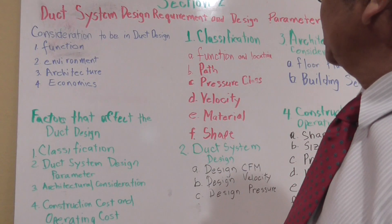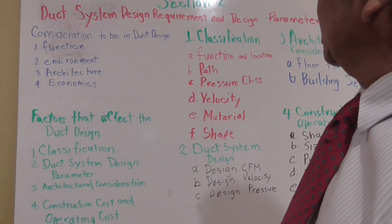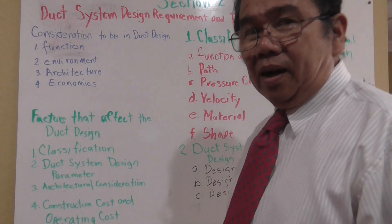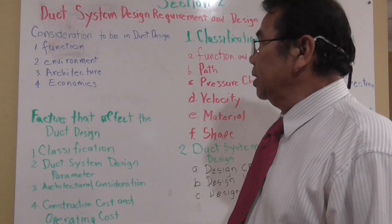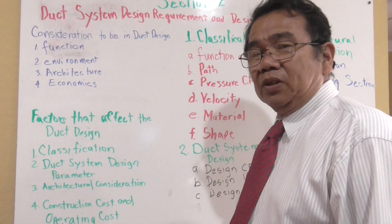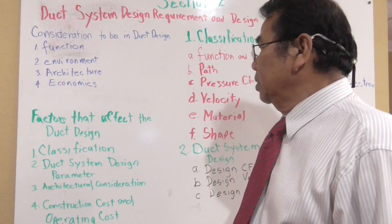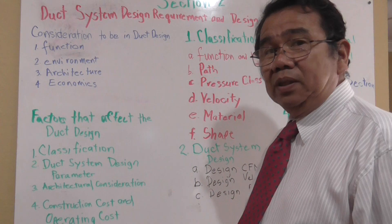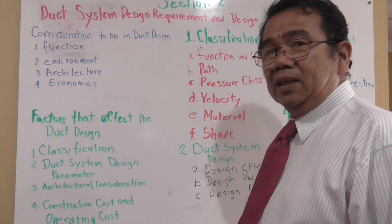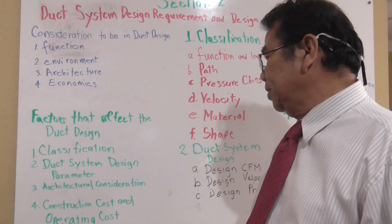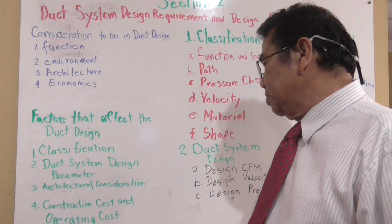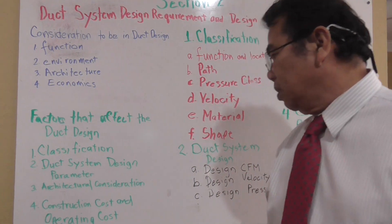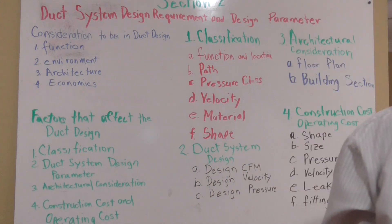Considerations to be included in the duct design are the function, the environment, the architectural, and the economic consideration. The factors that affect the duct design will be the classification, duct system design parameters, architectural consideration, and the construction cost and operating cost.